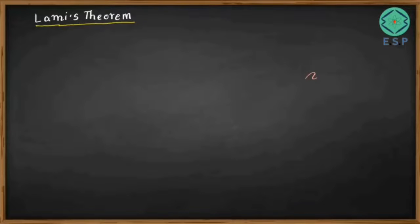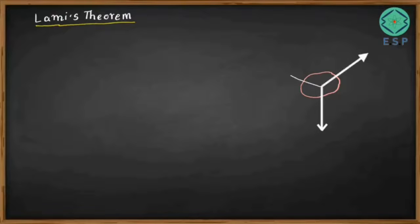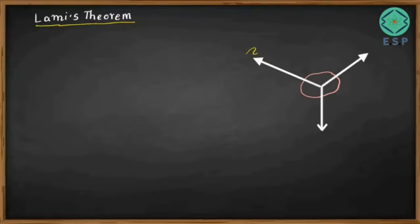Suppose we have a body. Here we have a body and this body is in equilibrium due to the application of three forces. We have three forces acting on this body — let's call them F1, F2, and F3 — and these three forces are keeping this body in equilibrium.